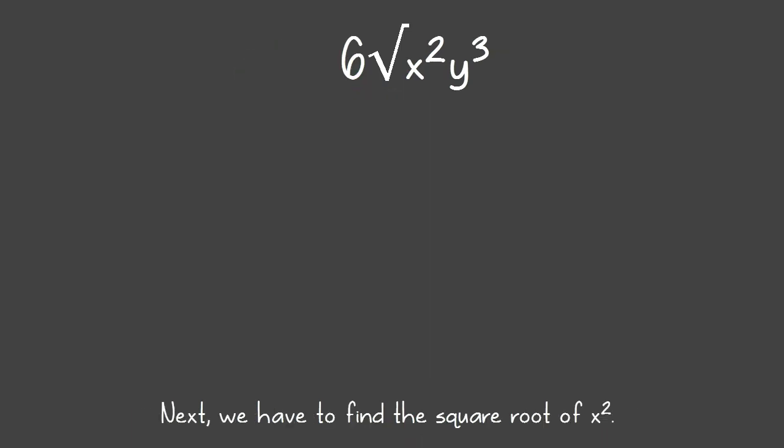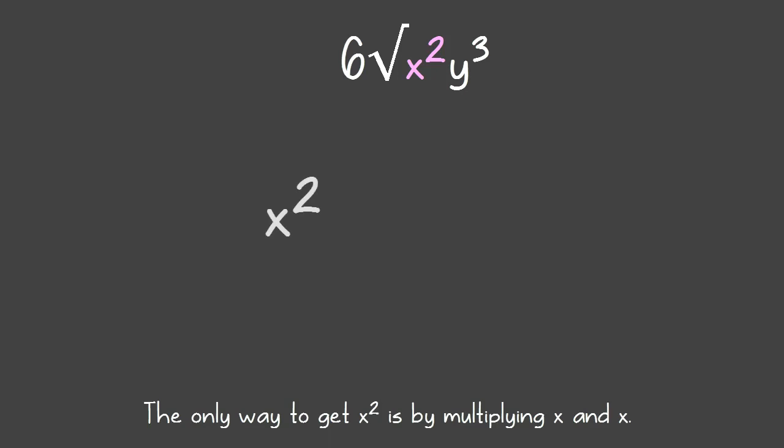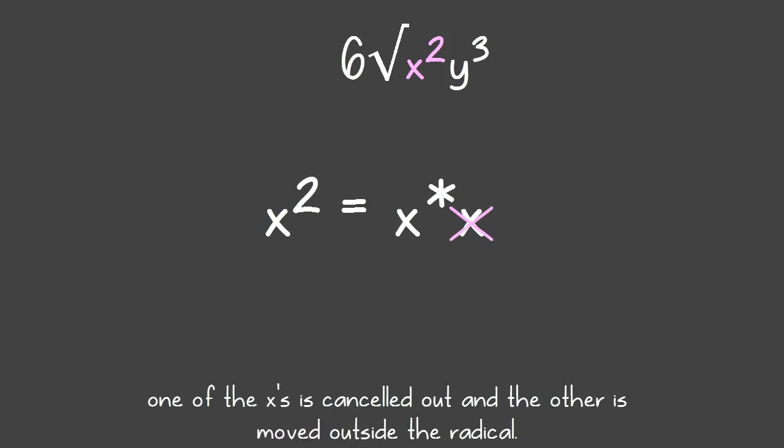Next, we have to find the square root of x squared. The only way to get x squared is to do x times x. Similar to what happened with the 6, one of the x's is cancelled out. The other goes outside the radical.